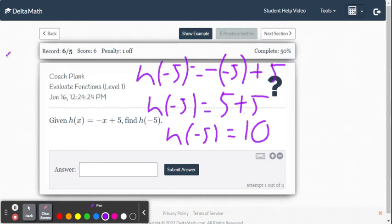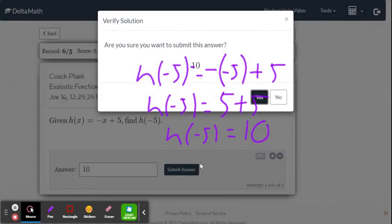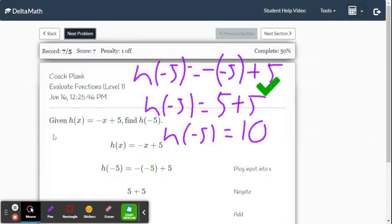You need to be very careful when you substitute the negative five and it's negative x. So we're going to take the opposite of negative five, which is the positive five, so we get ten. Let's plug that in here and see if that is the correct answer. Submit and get the green checkmark.